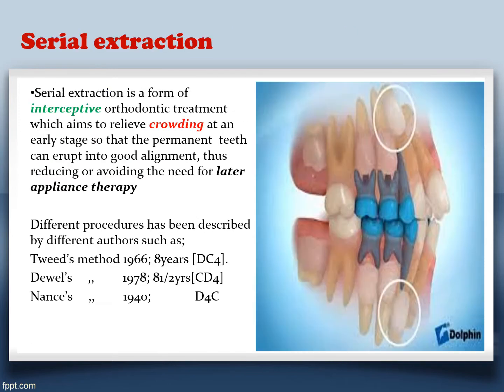Moving on to serial extractions — serial extraction is a form of interceptive orthodontic treatment which aims to relieve crowding at an early stage so that in future, fixed orthodontic treatment could be eliminated. It is a series of planned extractions to prevent future orthodontic treatment. There are three methods: the Tweed's method, the Dewel's method, and the Nance method. Tweed's method is done around 8–9 years of age.